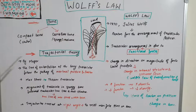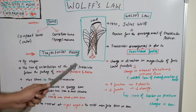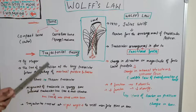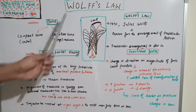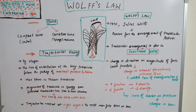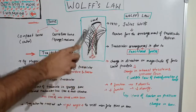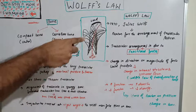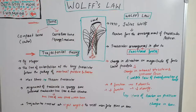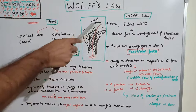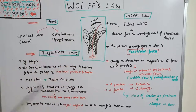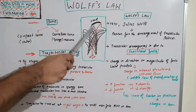The next concept is trajectorial theory, proposed by scientist Meyer. It states that the line of orientation of the bony trabeculae follows the pathway of maximal pressure and tension. I have drawn a picture of a bone — you can see these dark lines, which are the bony trabecular lines of orientation. The load is applied here, and maximum tension and pressure occur on both sides, causing a lot of stress.